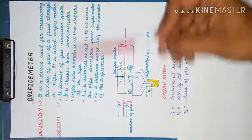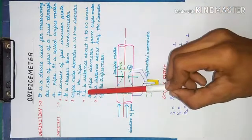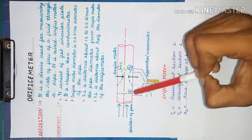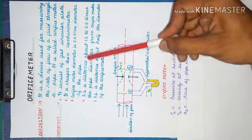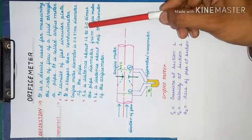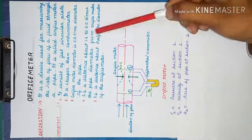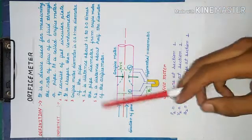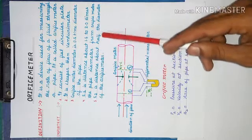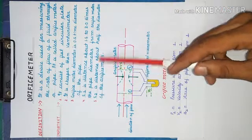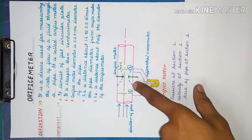The orifice meter diameter is 0.5 times the diameter of the pipe. Section one (S1) is located at a distance about 1.5 to 2.0 times the pipe diameter from the orifice meter, and section two is at a distance about half the diameter of the orifice meter.